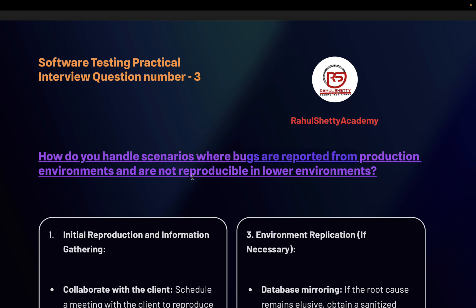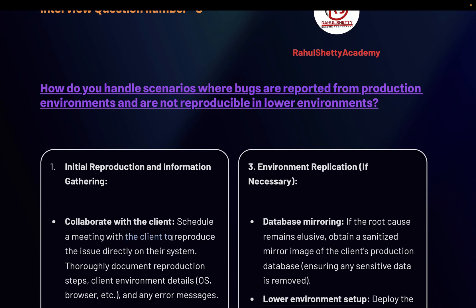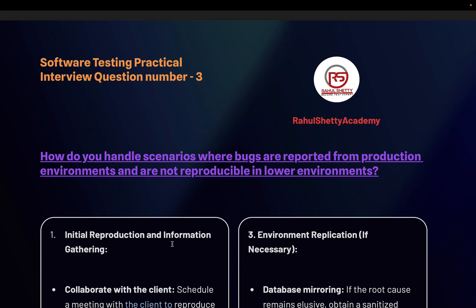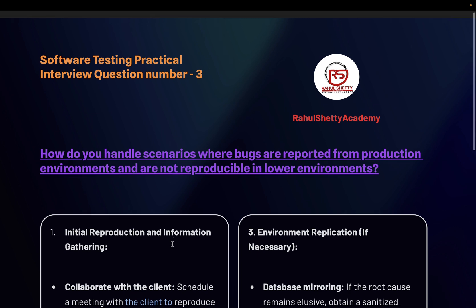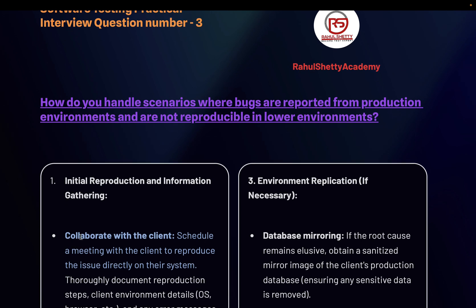The very first thing people usually do in projects is schedule a meeting with the client. You directly connect with the client, and in the meeting there will be your product owner, release manager, and QA. To reproduce the issue directly on their system, you will share screens — they will show you the screen and explain what issue they are seeing. If you are not clear, you can directly connect to them and they will reproduce it in their system.